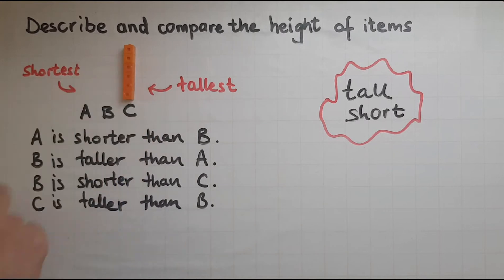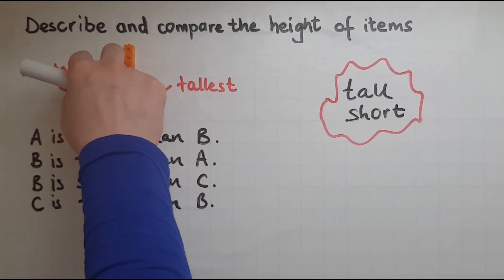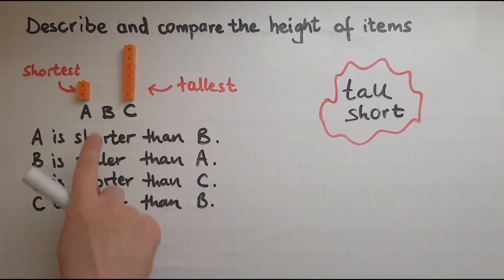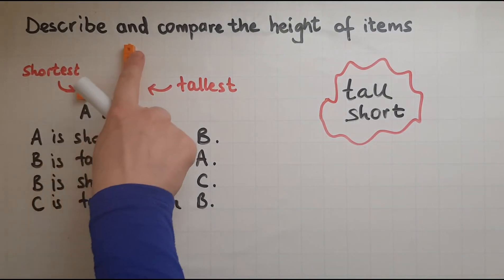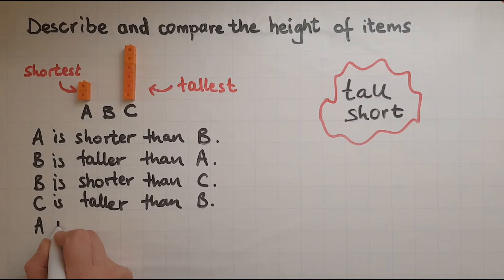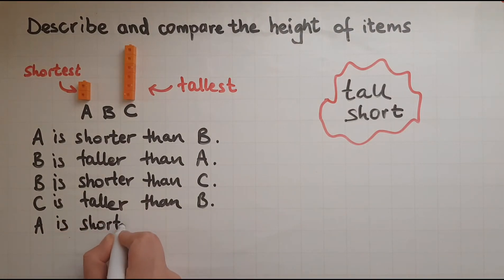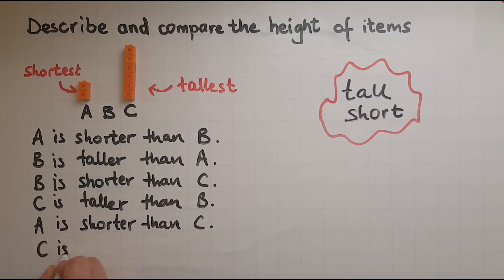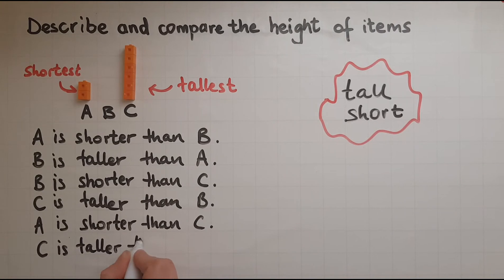And finally I will compare A with C. As you can see, A is shorter than C, whereas C is taller than A.